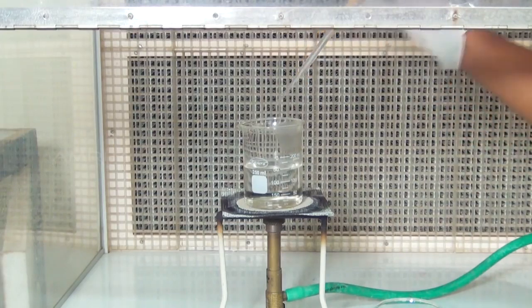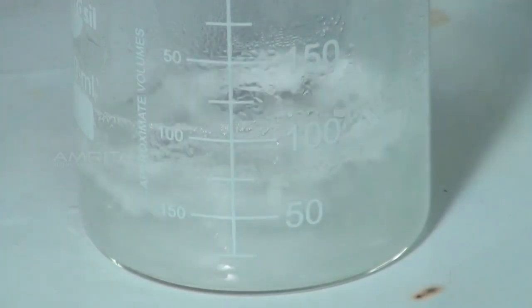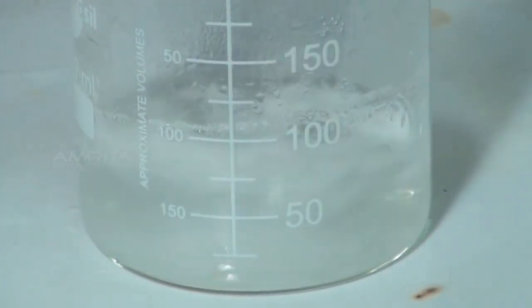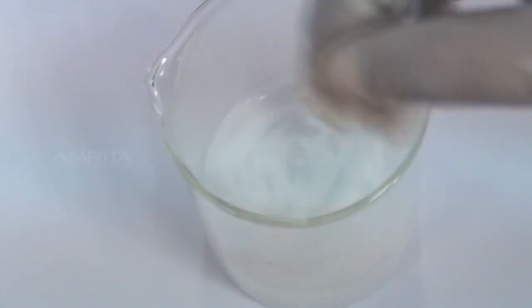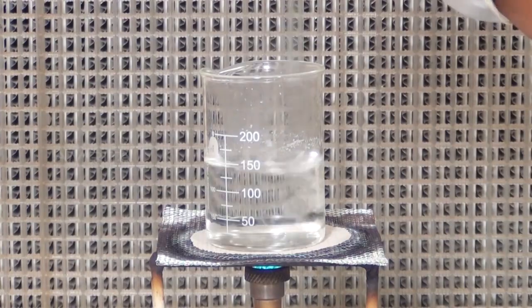Using a dropper, gradually add a minimum quantity of boiling water, just sufficient to dissolve the benzoic acid. Stir using the glass rod. If required, heating can be done to dissolve the benzoic acid.